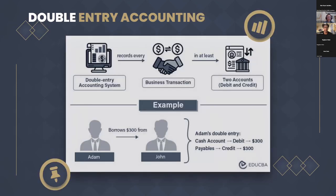Double entry accounting is the foundation of modern accounting systems. You'll see this in bookkeeping entries and reported in financial statements. This ensures that every single business transaction is recorded in at least two accounts, so it maintains the balance of the accounting equation — assets equals liabilities and equity. This gives a more complete view of the financial position of a company because you're tracking not only where the money is going, but where it came from.